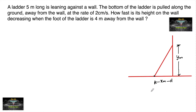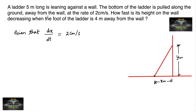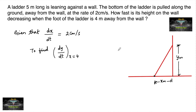It is given that dx/dt is equal to 2 cm per second, where X is the distance from the wall to the bottom of the ladder. We need to find how fast the height is decreasing when the foot of the ladder is 4 meters away from the wall, that is, we need to find dy/dt when X is equal to 4.